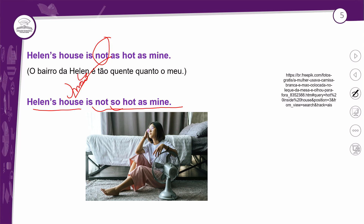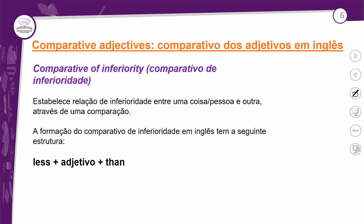Já que vimos o grau comparativo de igualdade, chegamos agora à inferioridade — comparative of inferiority. O comparativo de inferioridade estabelece uma relação de inferioridade entre uma coisa ou pessoa e outra através de uma comparação. A formação tem a seguinte estrutura: LESS + adjetivo + THAN.